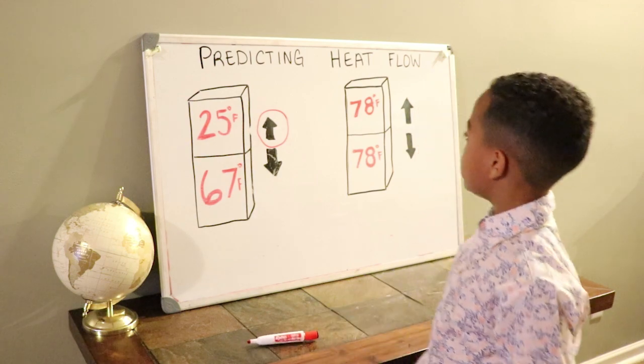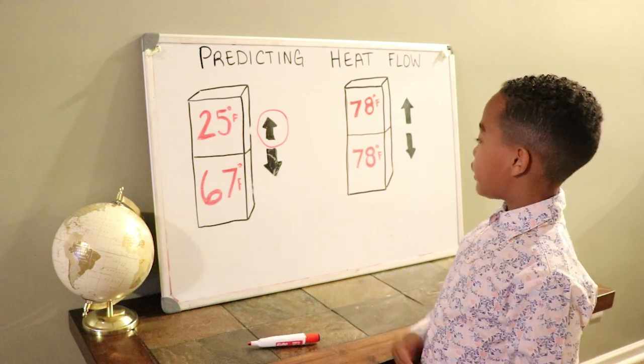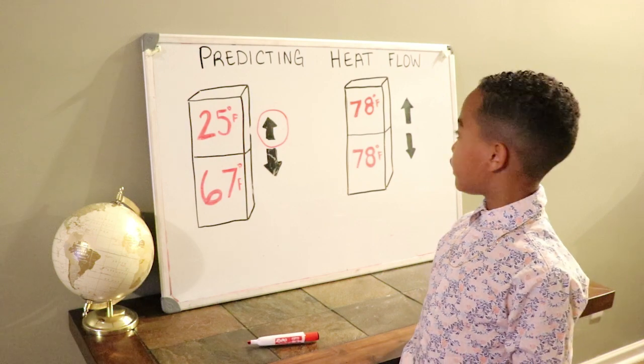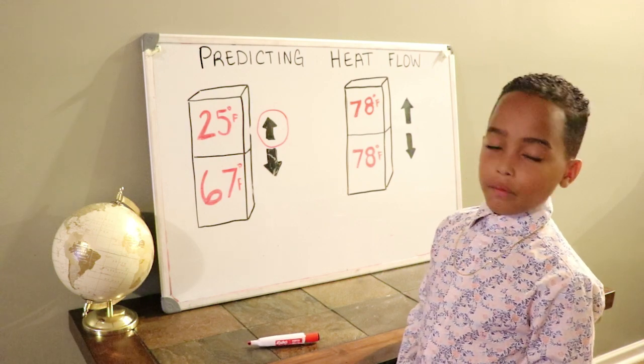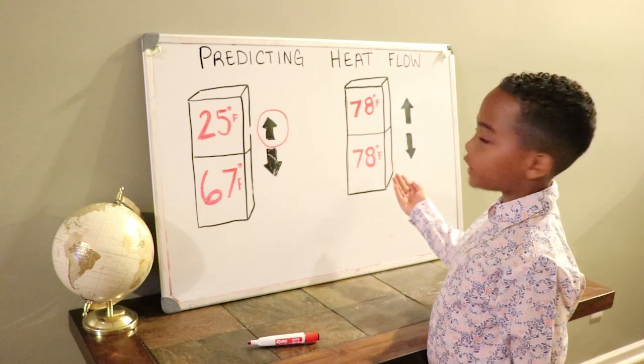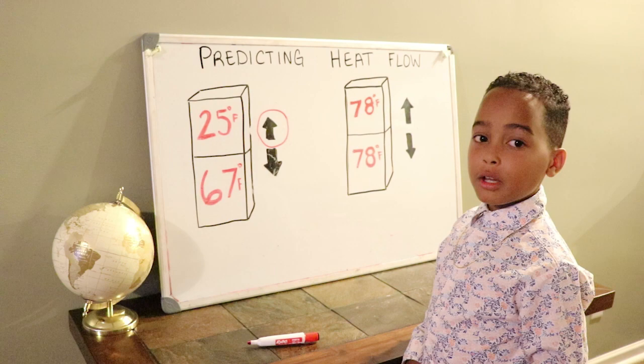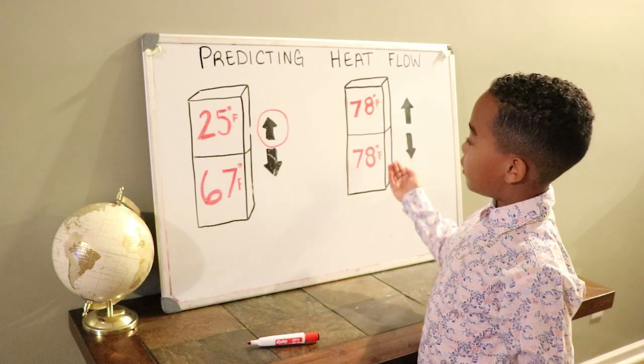Now we have another example, 78 degrees Fahrenheit with 78 degrees Fahrenheit. Which way do you think the heat will flow this time? There is no heat exchange. The temperature will remain the same because the temperatures are the same.